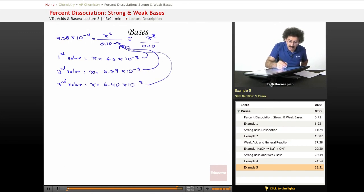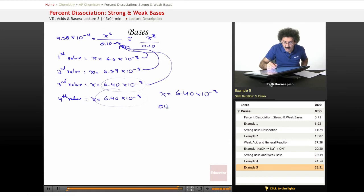I stick this back in there. I do it again. I get a fourth value. x equals 6.40 times 10 to the negative 3. Two values, one after the other match. I can stop there. x equals 6.40 times 10 to the negative 3. x happens to be my hydroxide ion concentration of 6.4 times 10 to the negative 3.